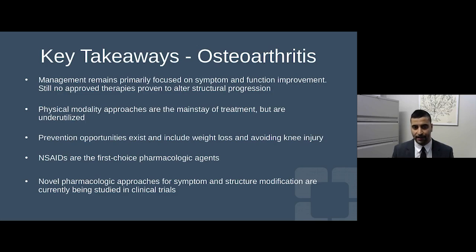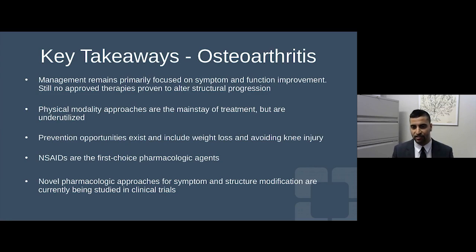In summary for osteoarthritis: our management still remains focused on symptom and function improvement. Unfortunately, we do not yet have a disease-modifying drug to alter structural progression. It's about slowing that train with weight loss, physical therapy, and the right combination of medications. Non-pharmacologic approaches like occupational therapy, physical therapy, and weight loss are the mainstay of treatment but are currently underutilized. NSAIDs remain the first choice from an oral medication standpoint, and we look forward to novel pharmacologic approaches going forward.